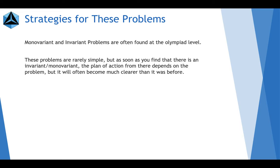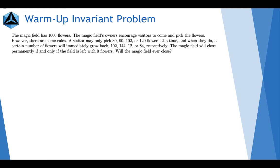Generally, that will lead you to find some sort of pattern or some sort of information about the problem that you didn't have before. So, here's a warm-up problem. The magic field has 1,000 flowers. The magic field's owners encourage visitors to come and pick the flowers. However, there are some rules. A visitor may only pick 30, 90, 102, or 120 flowers at a time.